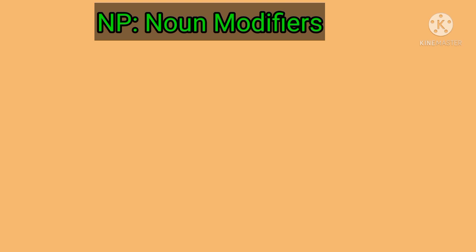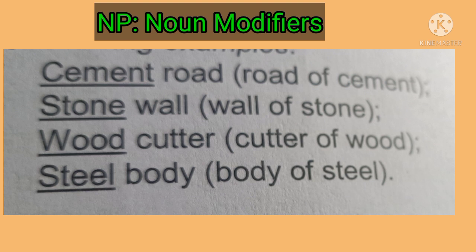Noun modifiers are nouns functioning as adjectives. In a noun phrase, two nouns often occur together where the first modifies the second. For example: 'cement road' — cement modifies road, meaning road of cement; 'stone wall' — stone modifies wall, meaning wall of stone; 'woodcutter' — wood modifies cutter, meaning cutter of wood; 'steel body' — steel modifies body, meaning body of steel.